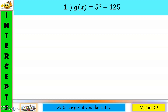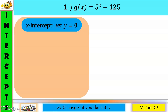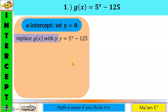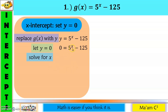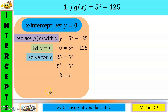First example: g of x equals five raised to x minus 125. For the x-intercept, replace g of x with y, then set y equal to zero. So zero equals five raised to x minus 125. Move negative 125 to the other side: 125 equals five raised to x. Replace 125 with five cubed. Now the bases are the same, so the exponents are equal: three equals x. My x is three and my y is zero. Therefore, the x-intercept is (3, 0).